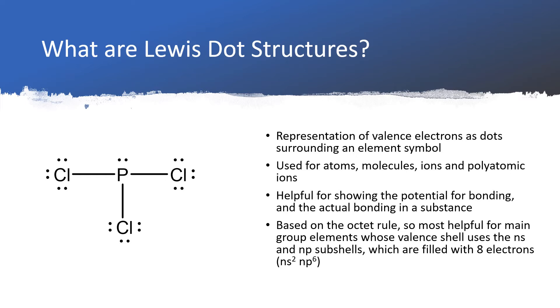Lewis dot structures are representations of the bonding between elements in compounds. We're going to use dots to represent the valence electrons, and they will generally be grouped in pairs.